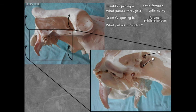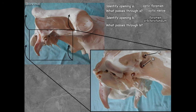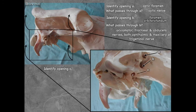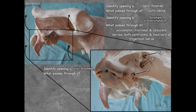Through the orbital fissure pass the oculomotor nerve (III), trochlear nerve (IV), ophthalmic nerve (V), and abducens nerve (VI) — all nerves to the periorbital structures. Because the round foramen is combined into that opening, the maxillary nerve of V also passes through it. Opening C is the oval foramen, transmitting the mandibular nerve.